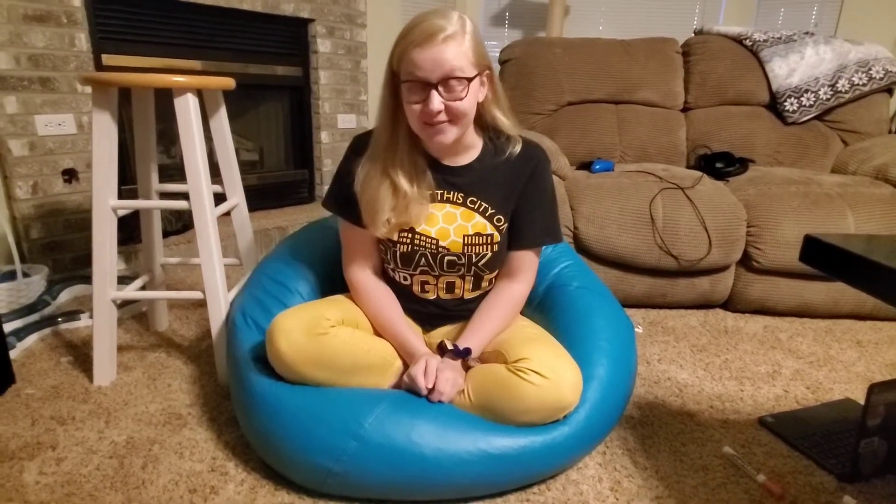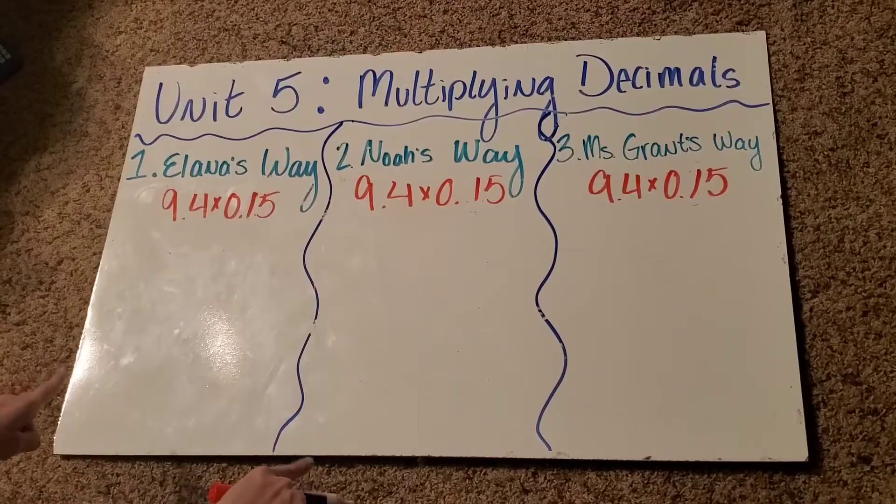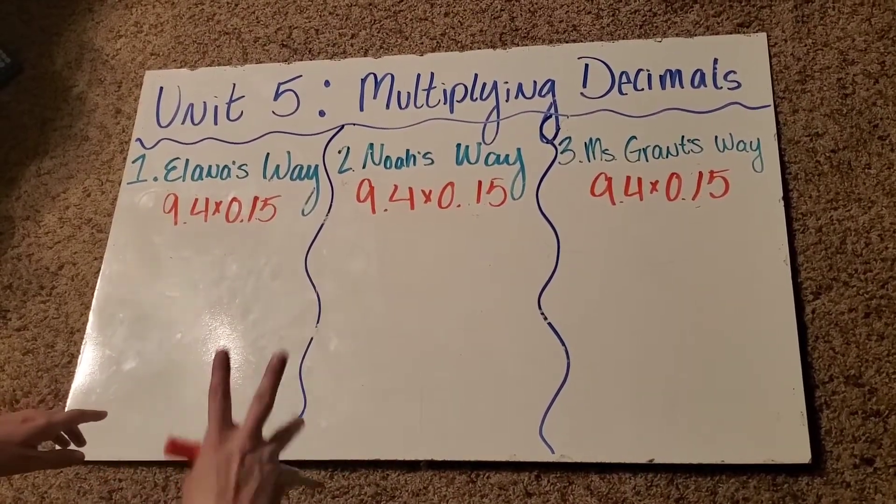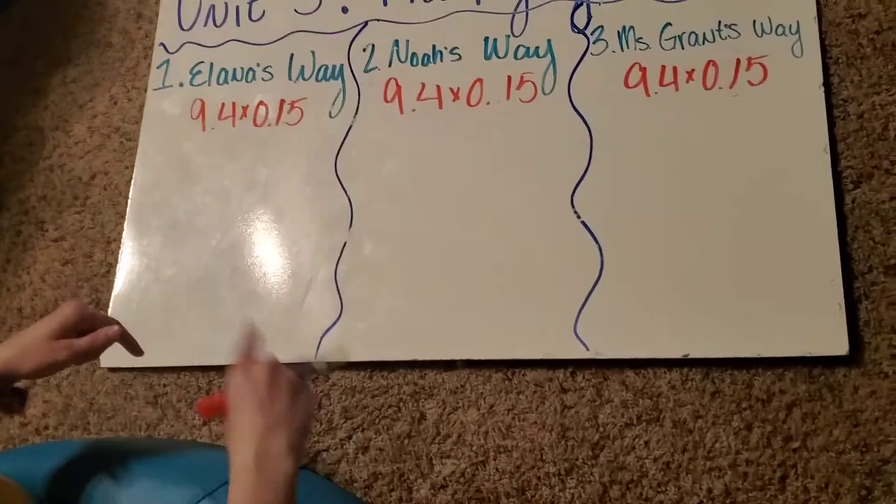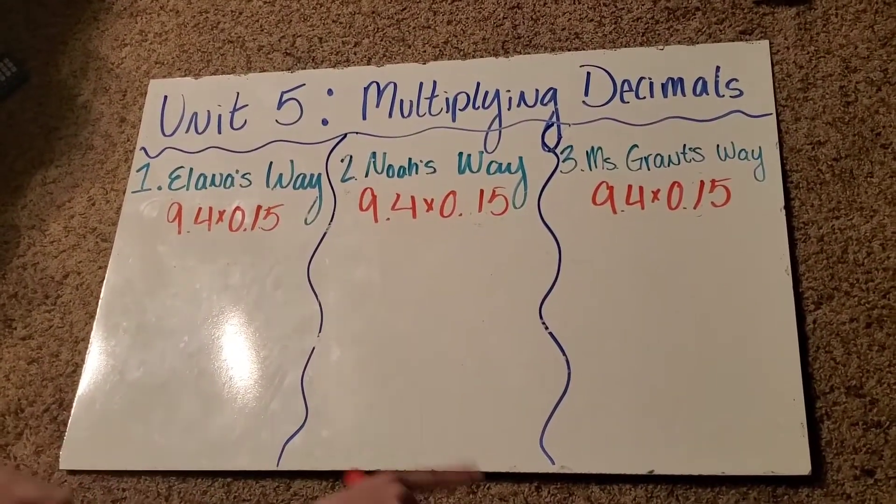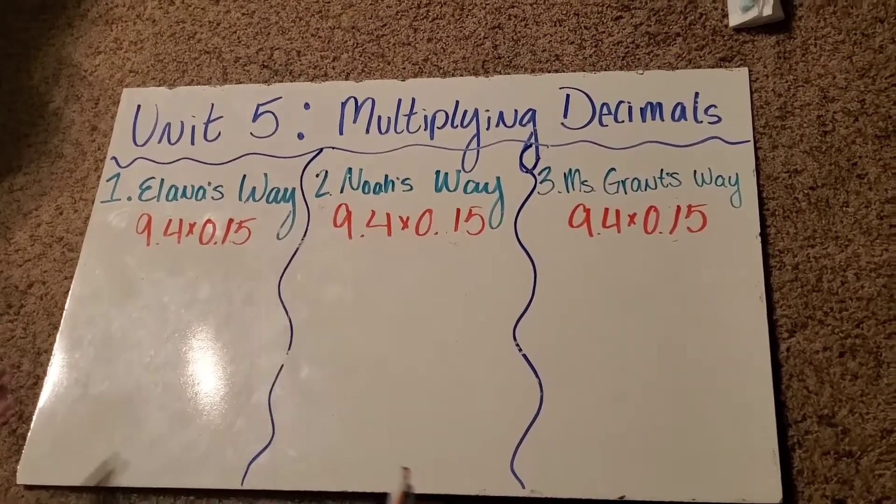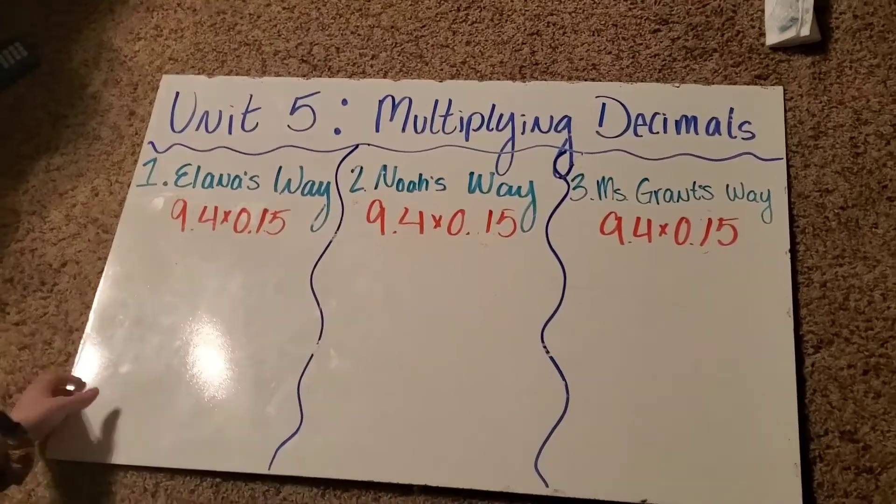Alright, so let's get to today's activity. So remember when we're multiplying decimals, there's three ways we can do it: Elena's, Noah's, and then my way. So I'm going to go through all the ways, and then for the Google form, you're going to pick which way that you want to work through these.